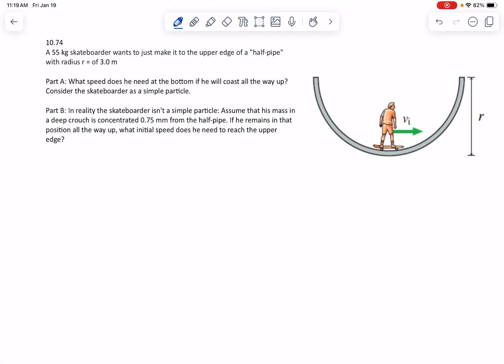On this problem, we've got a 55-kilogram skateboarder and a half-pipe radius of 3.0 meters.